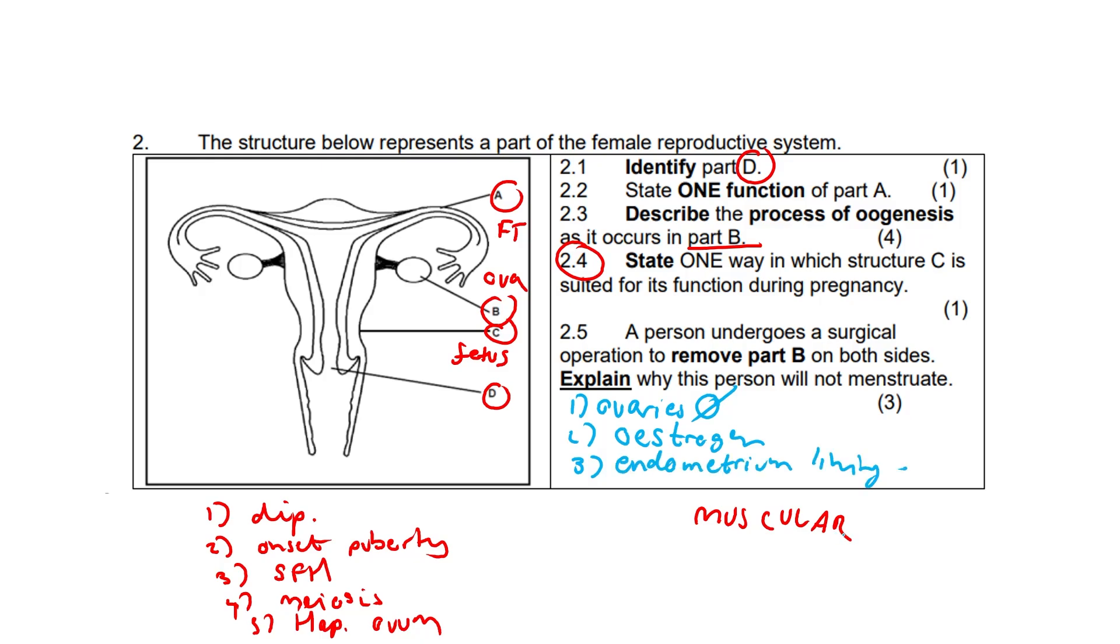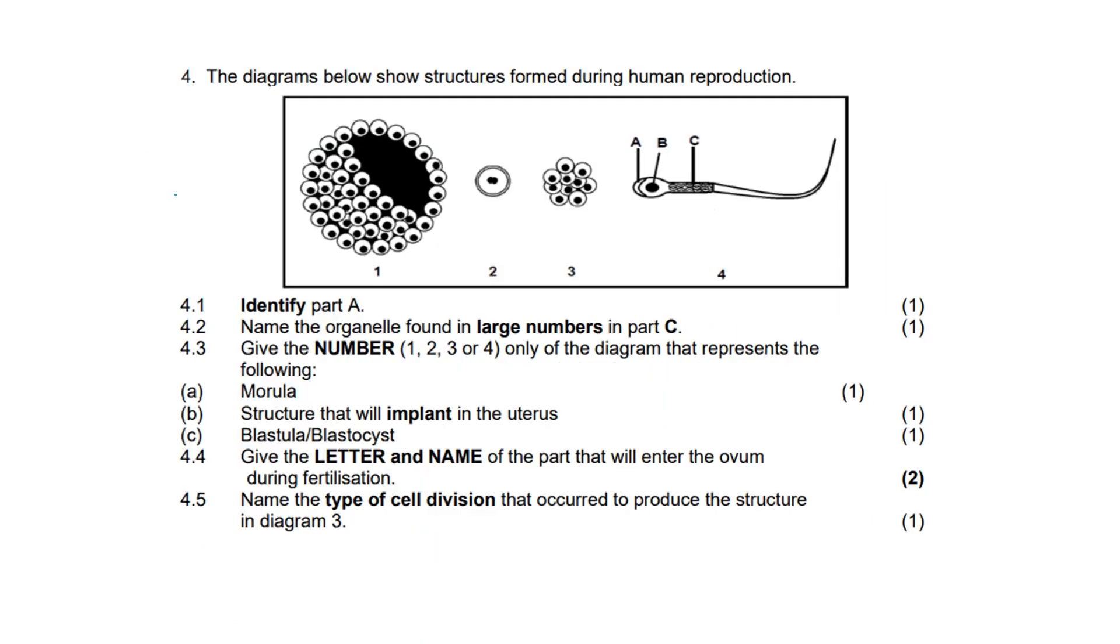Question four. The diagram illustrates the process of spermatogenesis and the development of sperm cells through several stages. Stage one is spermatogonia. This represents the initial phase where the male germ cells are present. These cells undergo mitotic divisions to produce primary spermatocytes.